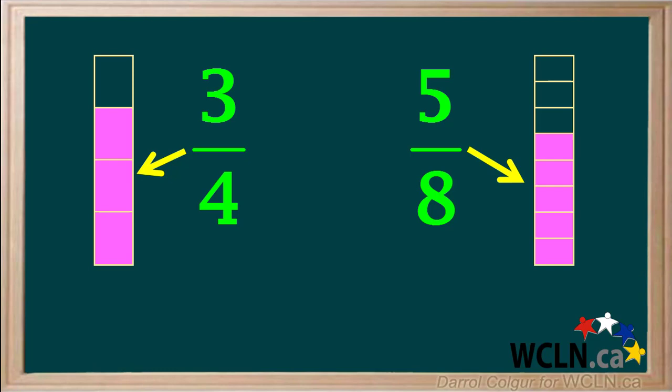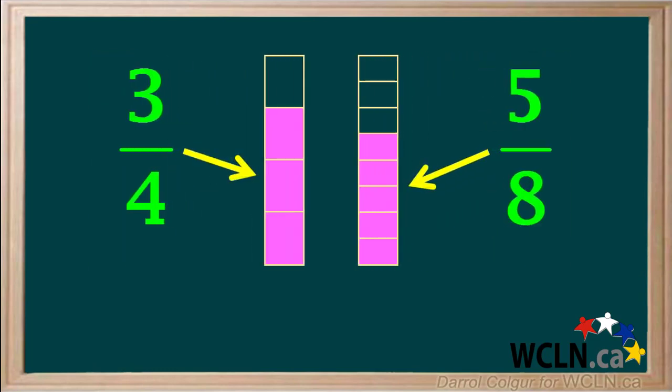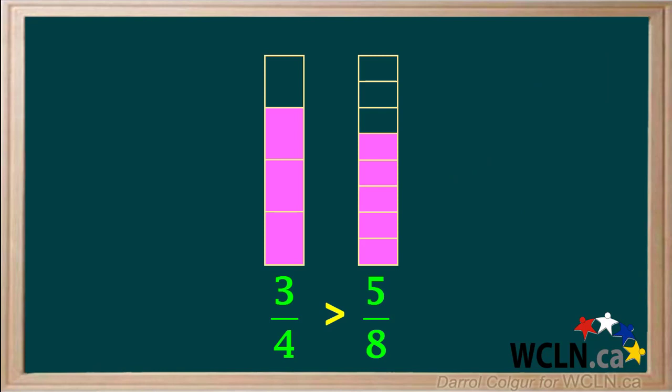Let's look at our fractions three-quarters and five-eighths, and we'll place them side by side. Even though the numerator five is greater than the numerator three, we see that the fraction three-quarters is actually larger than the fraction five-eighths.